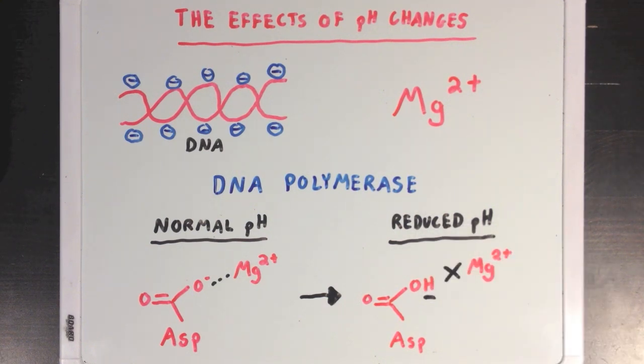Overall, this means that DNA polymerase won't be able to do its job properly in a low pH environment, and keeping this enzyme at an appropriate pH is essential to its normal function.